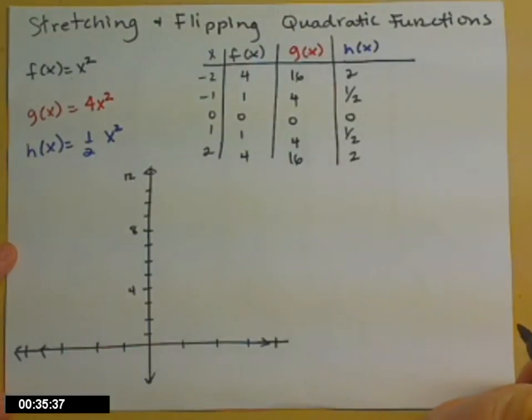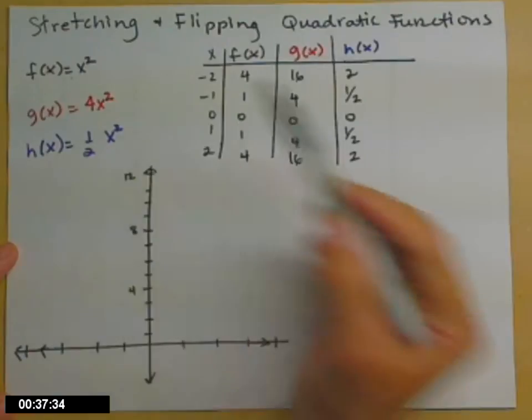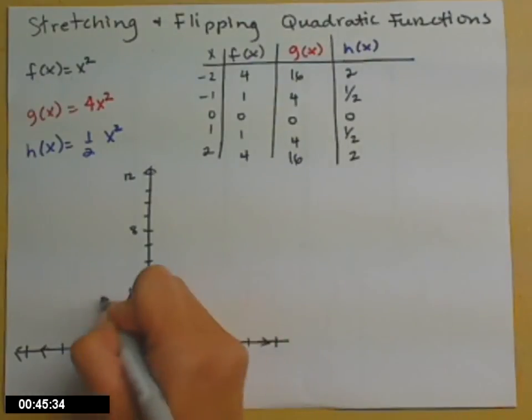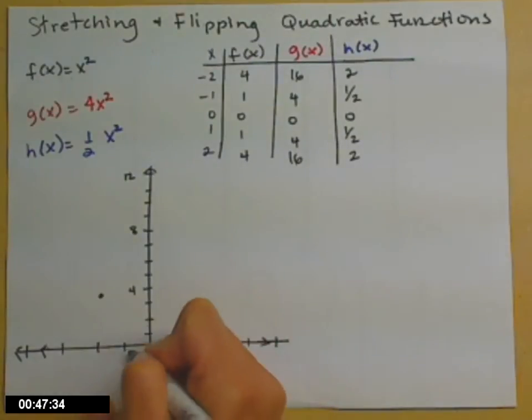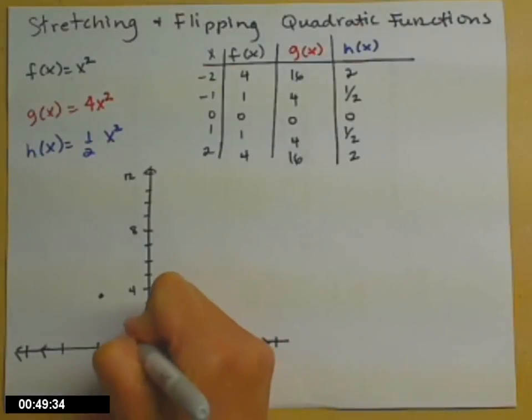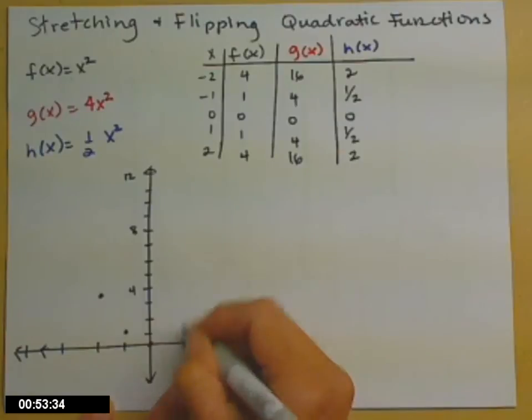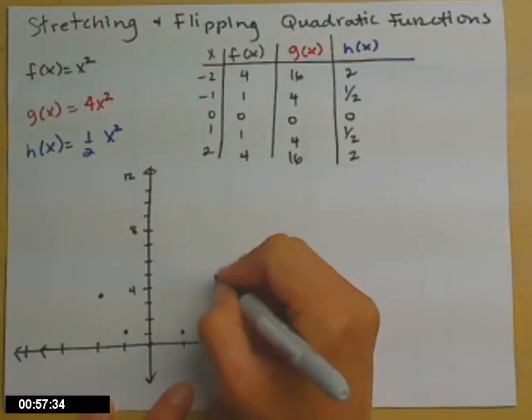So let's plot these points and see what effect putting a coefficient in front of the x² has. First let's plot the points for f(x). When x is -2, y is 4. When x is -1, y is 1. (0,0) is for all of them. When x is 1, y is 1 as well. And when x is 2, y is 4.